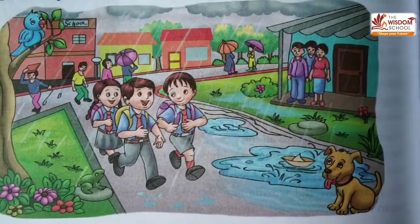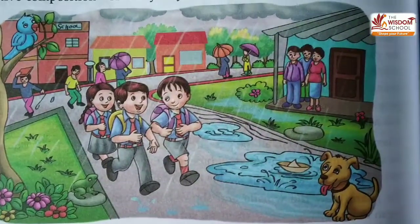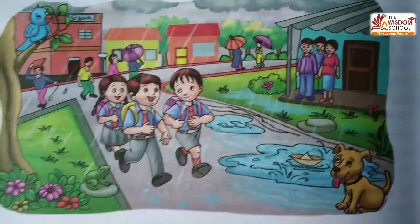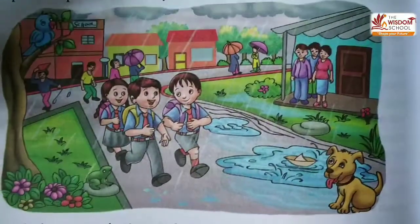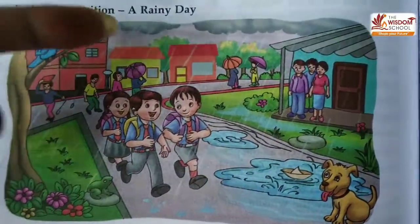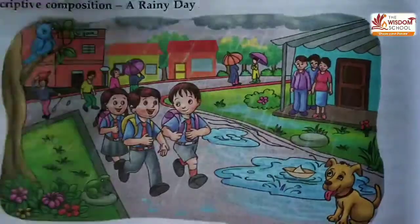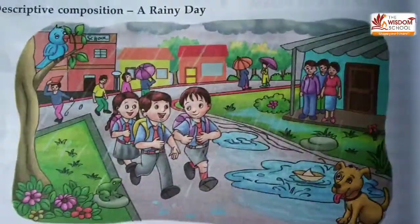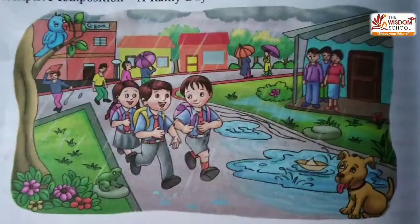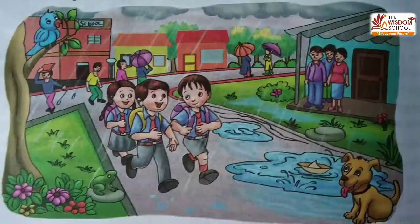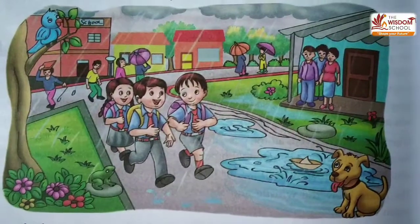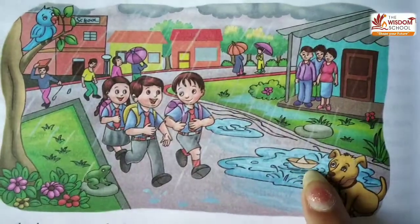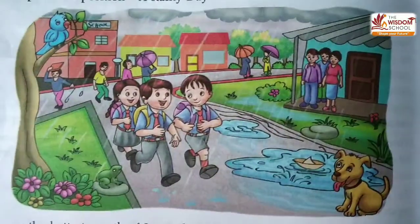There are some children going to school. It is a rainy day. People are taking umbrellas. Children are going back from school — they are going home. A dog is sitting on the street. There is also a paper boat.